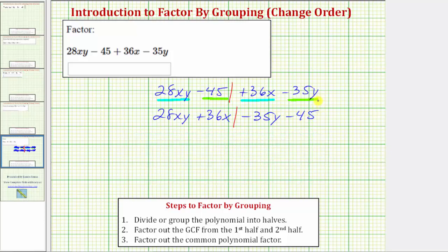Now we go back to step two and factor out the greatest common factor from each half. The greatest common factor from the first two terms is 4x. Factoring 4x out of 28xy leaves 7y, and factoring 4x out of 36x leaves positive 9, giving us 4x times the quantity 7y plus 9.